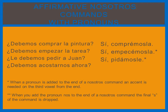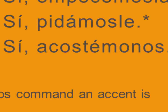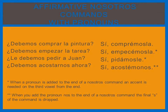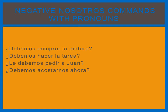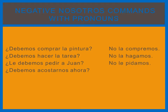The one tricky part is when you add the pronoun nos to the end of a nosotros command. In order for it to sound smoother, you drop the S of the command before adding nos. So rather than saying acostemosnos, which sounds cumbersome, we say acostémonos. With negative commands, the pronoun is simply placed between the no and the command: no la compremos, no la hagamos, no le pidamos, no nos acostemos.